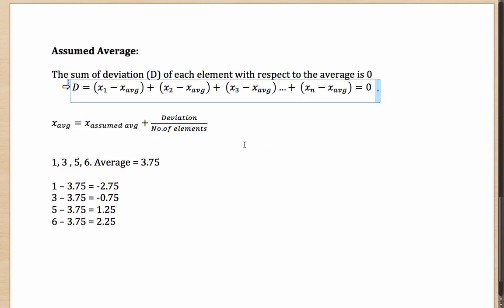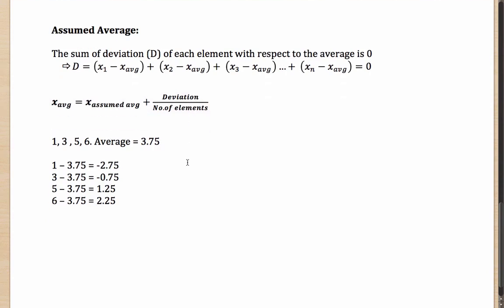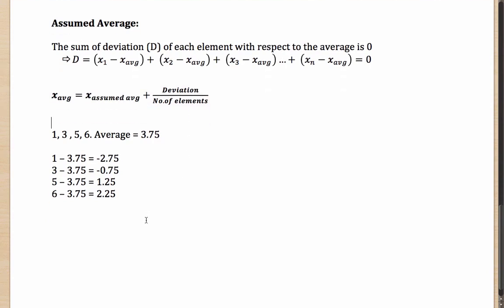This leads to a very important formula: the average for any set can be found by assuming an average, looking at the total deviation, and dividing it by the number of elements. Let's take a practical example. The scores of a cricketer in a few matches are 62, 68, 50, 49, 54, 43, 5, and 96.